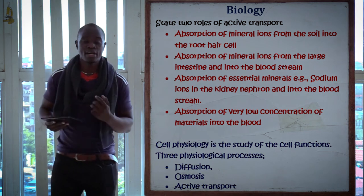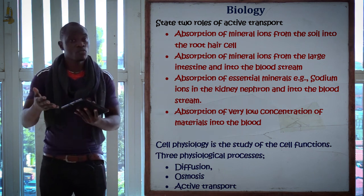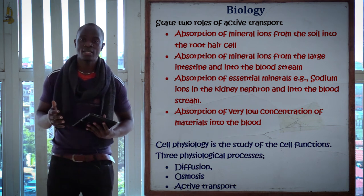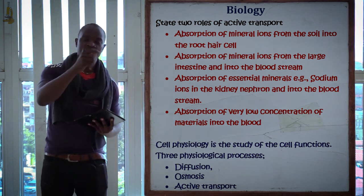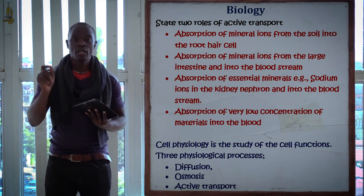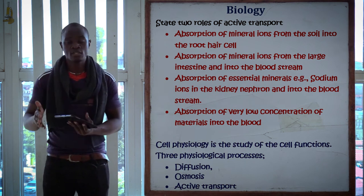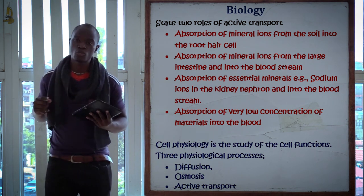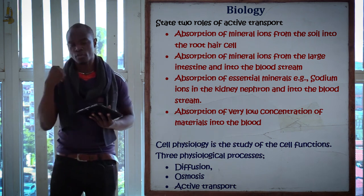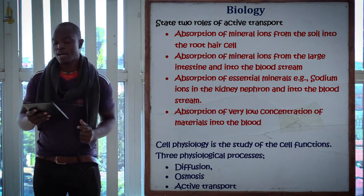The third physiological process is active transport. This is the movement of molecules against the concentration gradient. For diffusion, molecules move from a region of high concentration to a region of low concentration. But active transport tells the molecules they must move from a region of low concentration to a region of high concentration. Active transport always acts against the concentration gradient, moving molecules to the opposite side from what the concentration gradient would dictate. Those are the three main physiological processes: diffusion, osmosis, and active transport.